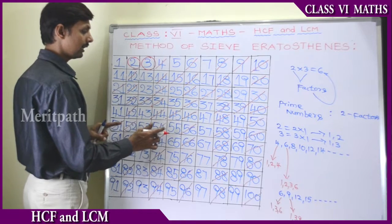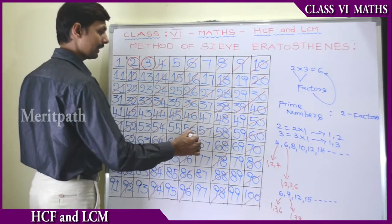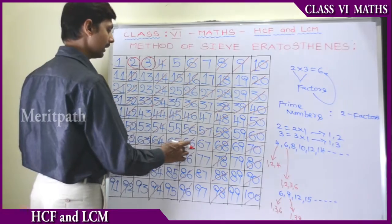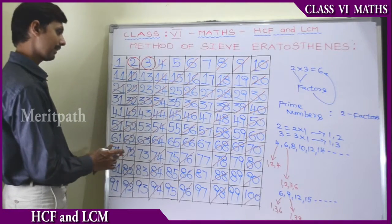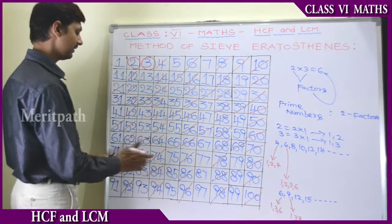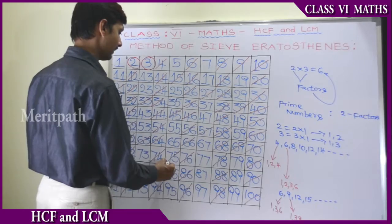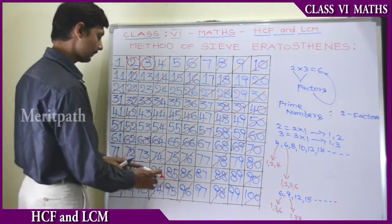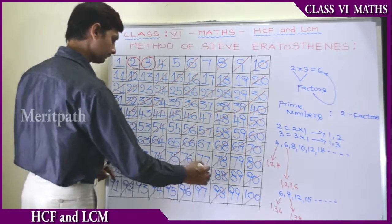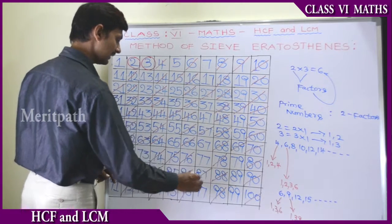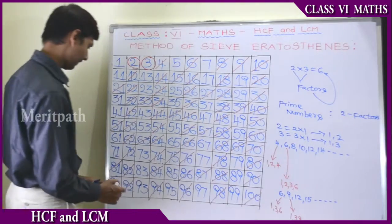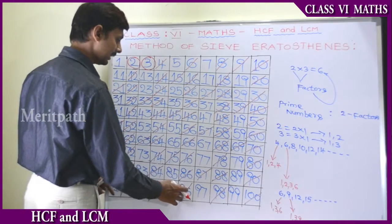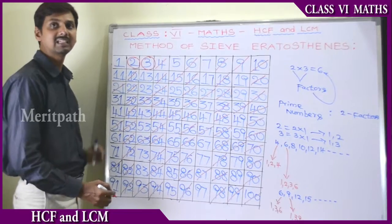And 54 is completed already. 57, and after 60. After 63. And 66. And then 69. After 72. And then 75. And then 78. 81. And then 84. And 90. 93. And 96. And 99. All the multiples of 3 are completed here.